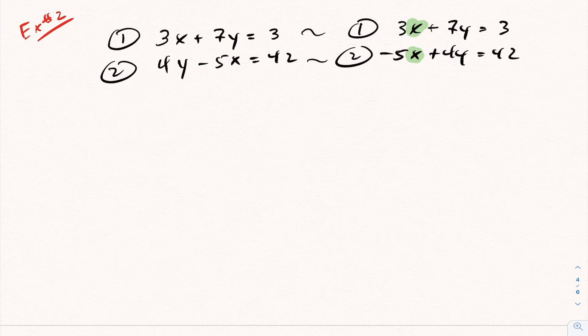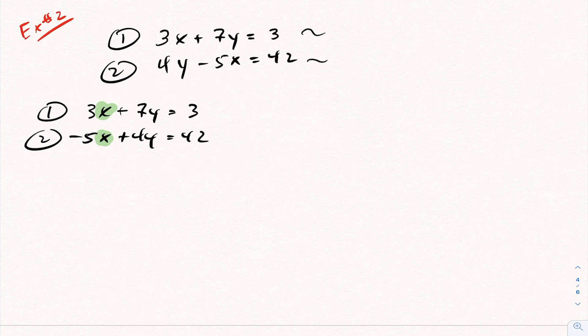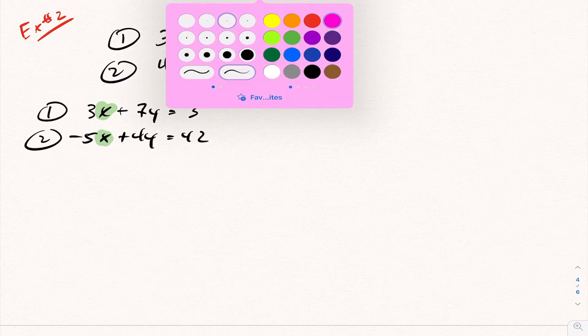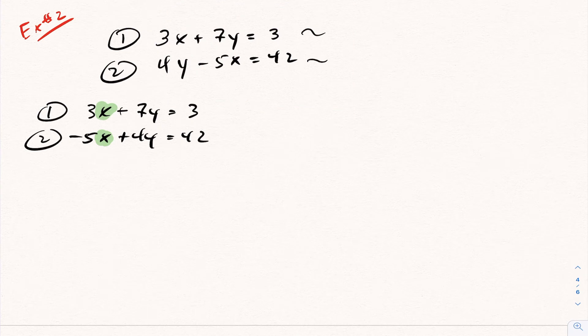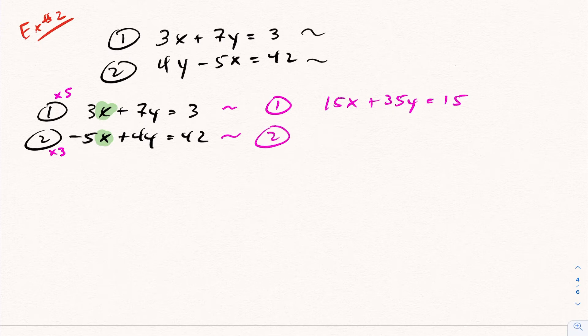What I need to be able to do is I need to set up a situation where the coefficients are the same. I can't just multiply one equation by a certain number to make the 3 a 5 or the 5 a 3. But what I can do is multiply the first equation by 5 and multiply the second equation by 3. So what happens there is this ends up being 15x plus 35y equals 15, and then my second equation ends up being negative 15x plus 12y equals 126.